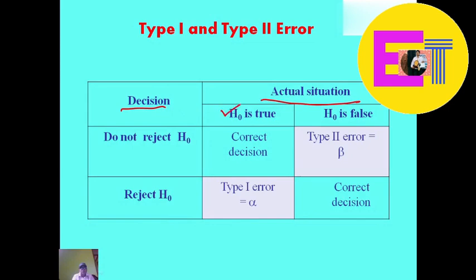If the null hypothesis is true and we accept it or do not reject it, this is the correct decision. Similarly, when the null hypothesis is false and we reject it, this is also a correct decision.